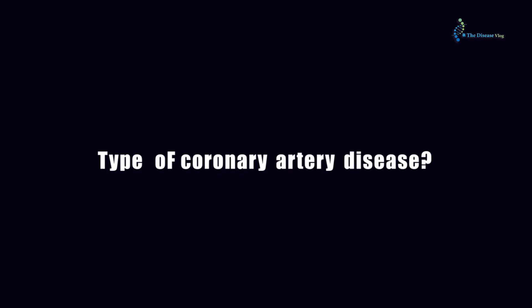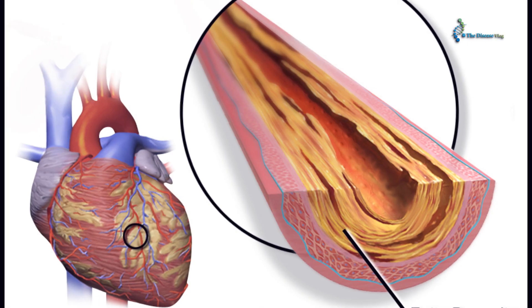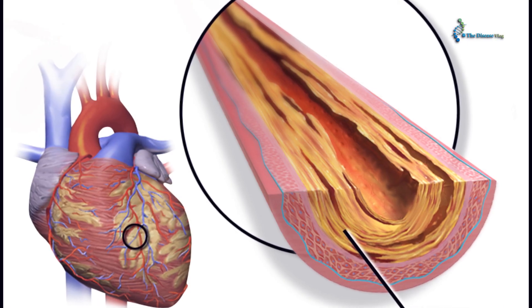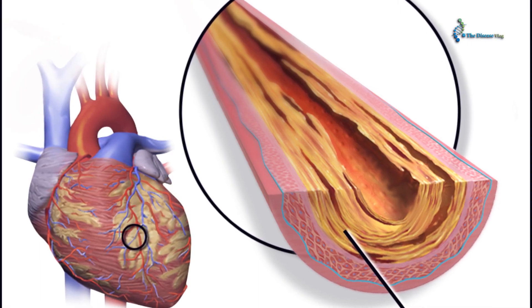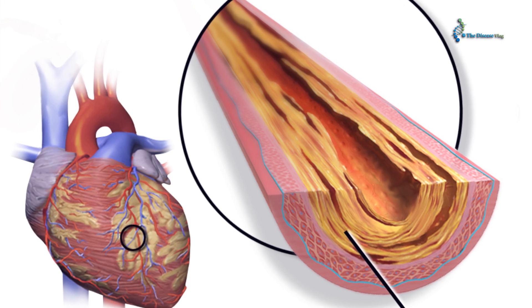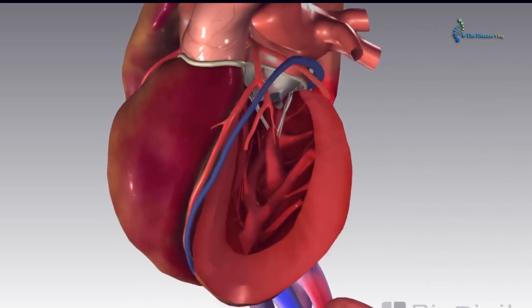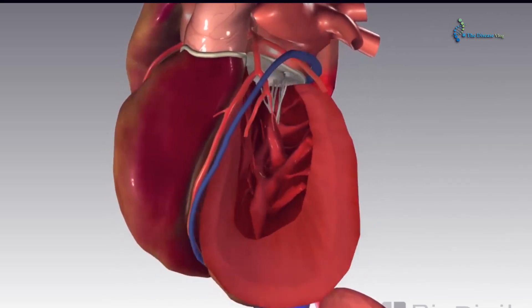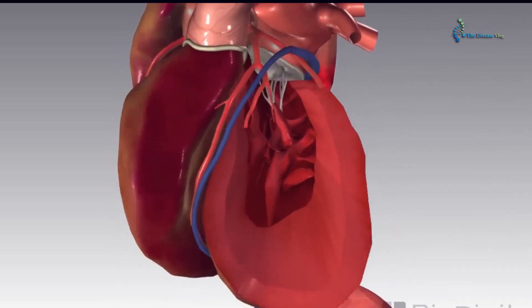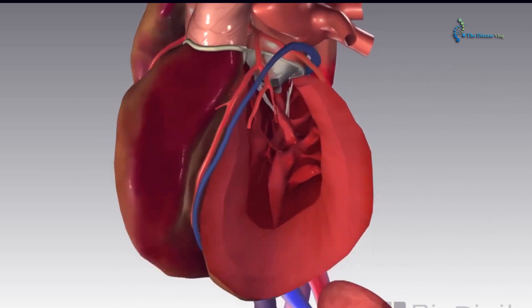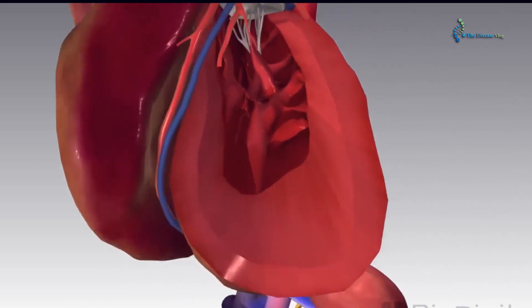Types of coronary artery disease. Obstructive coronary artery disease is a common and well-known type that occurs when arteries narrow down due to plaque formation, cutting down the blood flow to the heart, and ultimately a sudden heart attack develops.